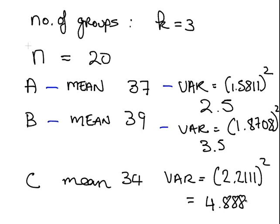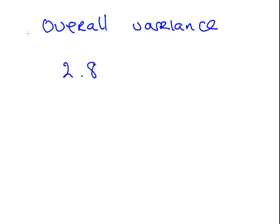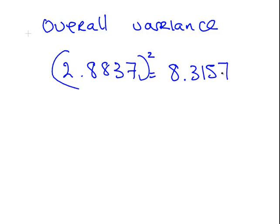So that is the mean and variance for each of the subsamples. The overall variance is 2.8837 squared and I am going to make that to be 8.3157. That is the overall variance, we are going to use that as well.